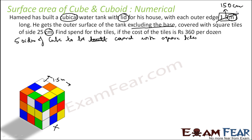So the edge becomes 150 centimeters, and each square tile is 25 centimeters. We have to find the total cost for the tiles. The cost per dozen — that is per 12 pieces — is 360 rupees. Before finding the total cost, we need to find the number of tiles required to cover the whole tank.